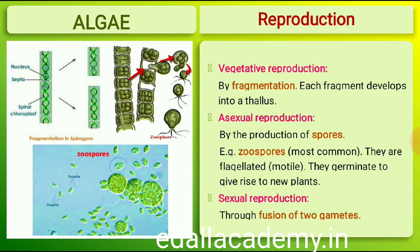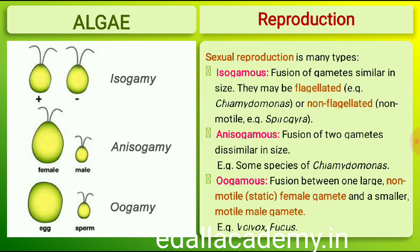Zoospores are flagellated and motile, and on germination give rise to new plants. Sexual reproduction takes place through fusion of two gametes. These gametes can be flagellated and similar in size, as in Chlamydomonas, or non-flagellated, non-motile but similar in size, as in Spirogyra. Such reproduction is called isogamous.